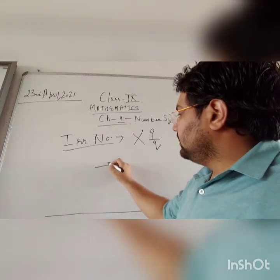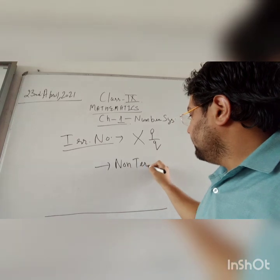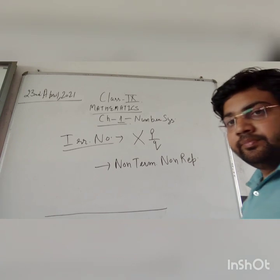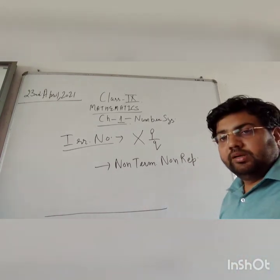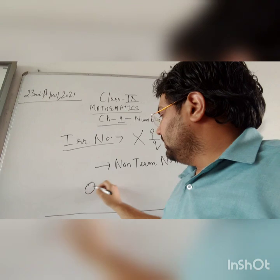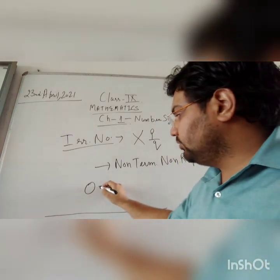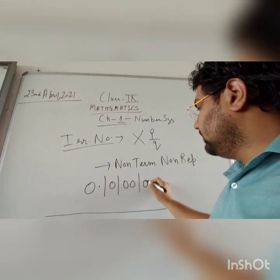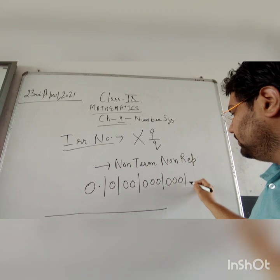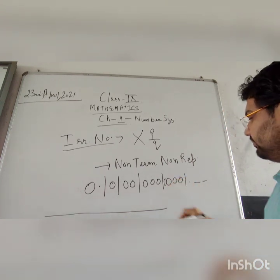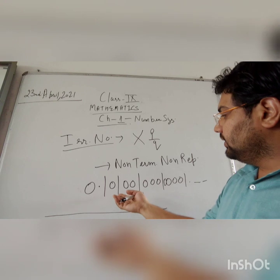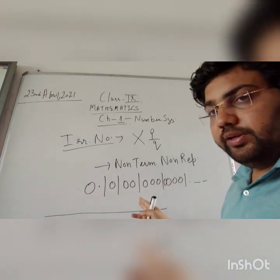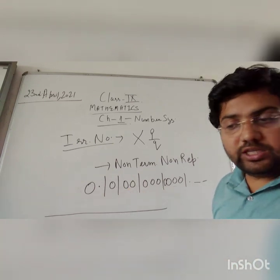The third case that is left is non-terminating and non-repeating. These numbers are irrational numbers. So one of the examples can be, they should not terminate as well as they should not repeat. So one of the simplest example is 0.1, 0.01, 0.001, 0.0001, 0.00001, 0.000001 and so on. Here digits are 0 and 1 but there is no pattern. There is no fixed pattern over there. This is the kind of irrational numbers.